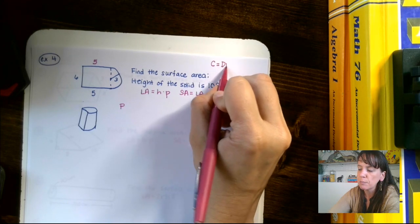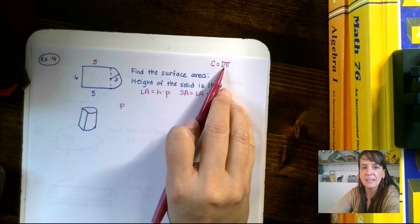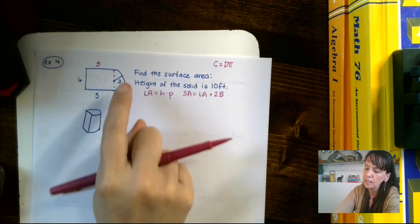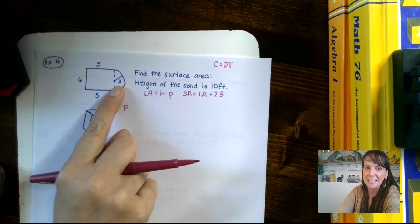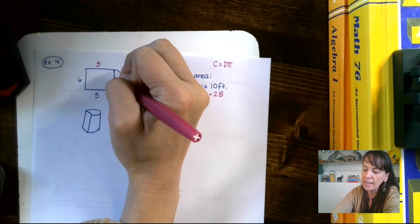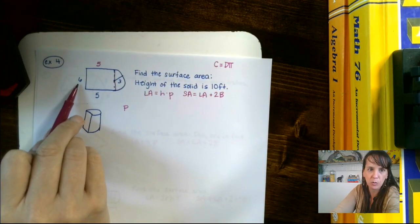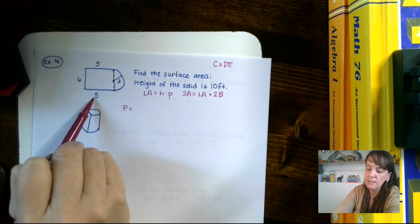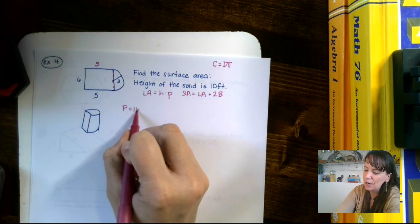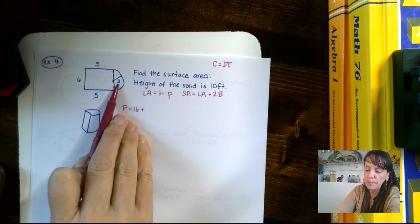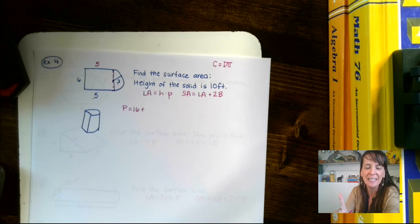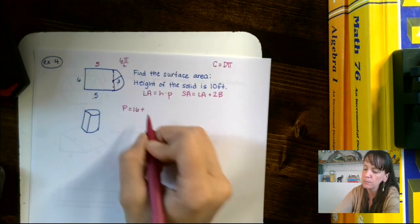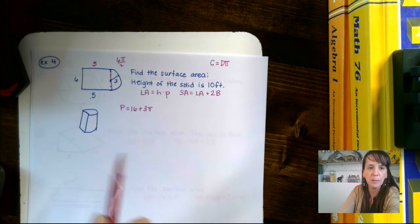Our radius is 3, so our diameter is 6. Our perimeter is 5 plus 5, which is 10, plus 6, which is 16. Then for the curved part, the circumference would be 6 pi, but there's only half a circle, so we cut it in half: 3 pi. So the total perimeter of the composite base is 16 plus 3 pi.